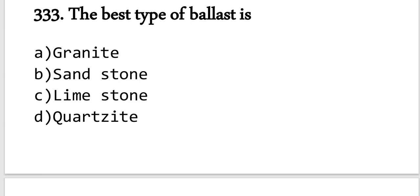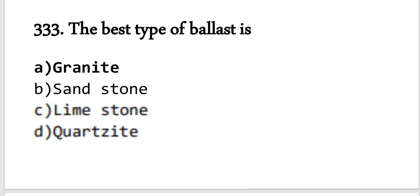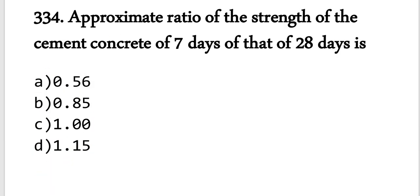Question number 333: The best type of ballast used in railways is granite. Granite can sustain and bear loads effectively. So granite is the best type of ballast and option A is correct.